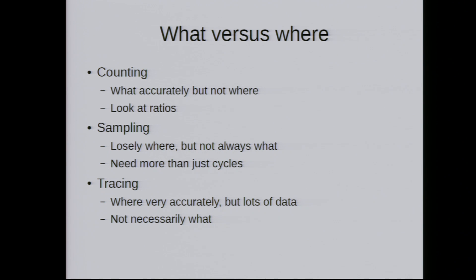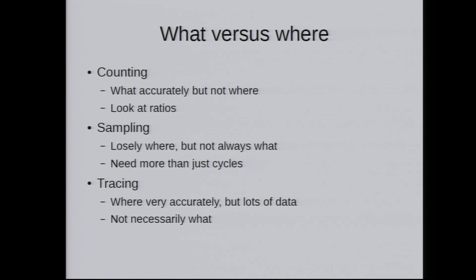The third technique, more used in software but increasingly possible with hardware, is tracing: you trace everything that something is doing for some time. The disadvantage is it generates a lot of data — it essentially becomes a big data problem. It tells you where very accurately, but not necessarily what, because usually you only see a subset of what's happening. It can be very useful but you have to know how to apply it, because you cannot use it for too long.